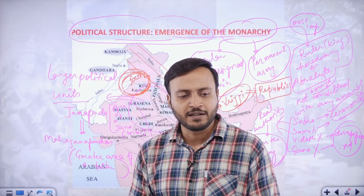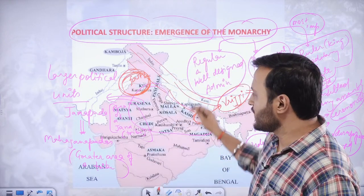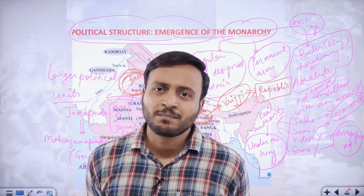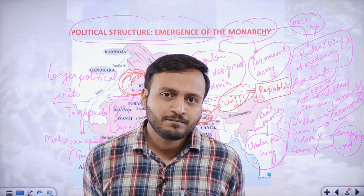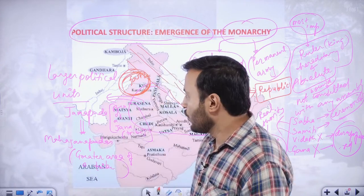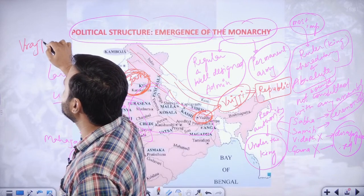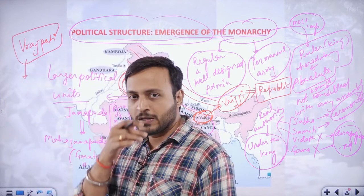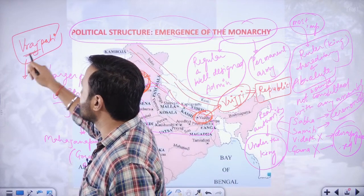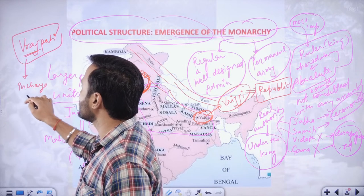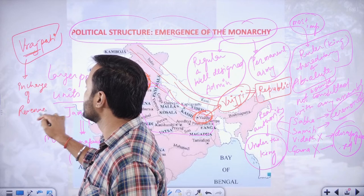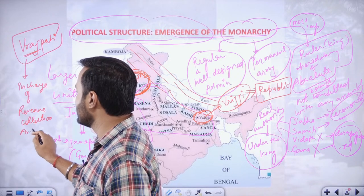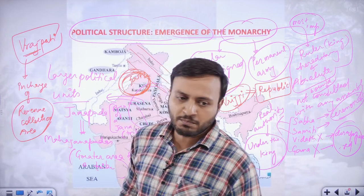There were also developments of armies, the taxation system, and statecraft. One important officer known as the Vrajapati became important — he became the in-charge of the revenue collection areas. The places or areas from where the revenue was collected, the in-charge of that area was called the Vrajapati.